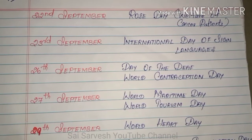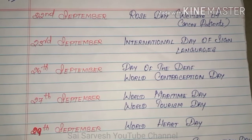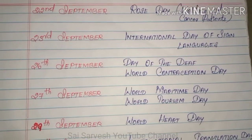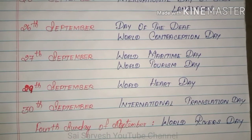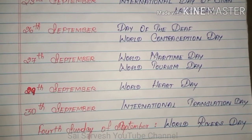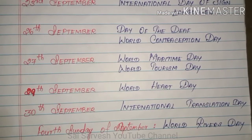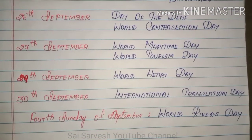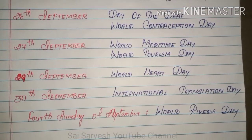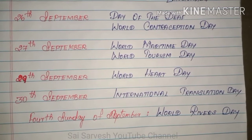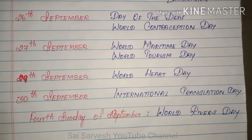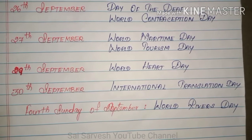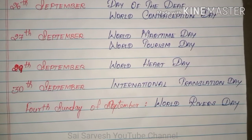23rd September: International Day of Sign Languages. 26th September: Day of the Deaf and World Contraception Day. 27th September: World Maritime Day and World Tourism Day.